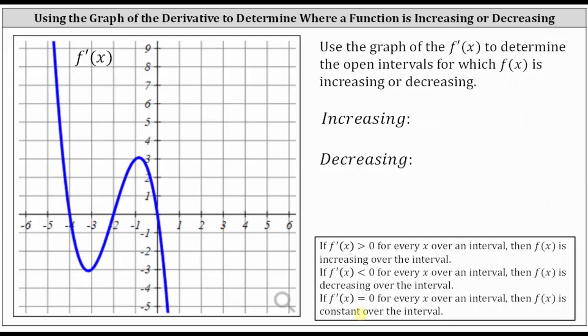Let's begin by determining where the first derivative is equal to zero, which would be the x-intercepts of the graph, which are at x equals negative four, x equals negative two, and x equals zero.